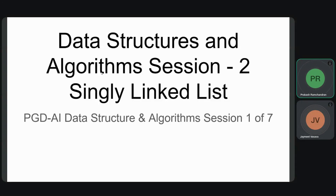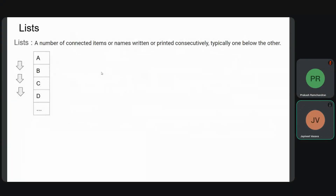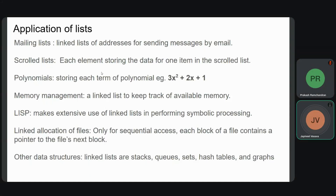Thank you, Professor, for the introduction. Hello everyone. This is a simple English presentation. We will be discussing a brief introduction and some code. First, what is a list? A list is a number of connected items or names written or printed consecutively, typically one below the other, as you can see in the diagram. Applications of a list in computer terms include mailing lists, which are linked lists of addresses for sending messages by email, and scroll lists, where each element stores data for one item.